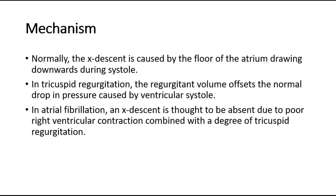For its mechanism, normally the X-descent is caused by the floor of the atrium drawing downwards during systole. In tricuspid regurgitation, the regurgitant volume offsets the normal drop in pressure caused by ventricular systole. In atrial fibrillation, an X-descent is thought to be absent due to poor right ventricular contraction, combined with a degree of tricuspid regurgitation.